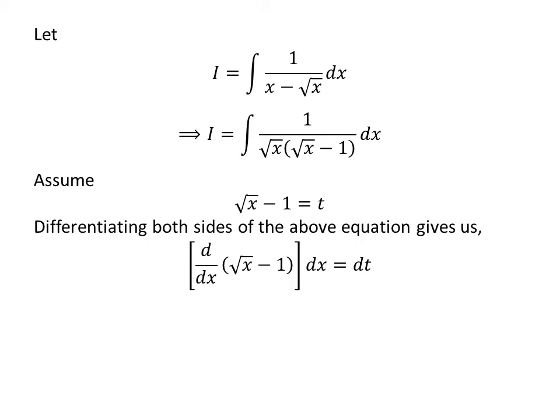Taking the differential of both sides of the equation gives us: the derivative of square root of x minus 1 with respect to x, times the differential of x, is equal to the differential of t. We know the derivative of square root of x minus 1 is equal to 1 upon 2 times square root of x. So, 1 upon 2 times square root of x times dx is equal to dt.